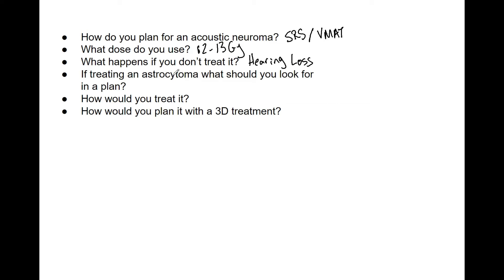Now for astrocytoma — what would you look for in a plan? If you're reviewing a CT and you see the PTV, the first thing you want to assess is where it is in relation to the chiasm. Is it wedged between the chiasm? There are optic nerves, a brain stem, and many OARs in the brain that you need to plan around, knowing the dose limits for those different structures.